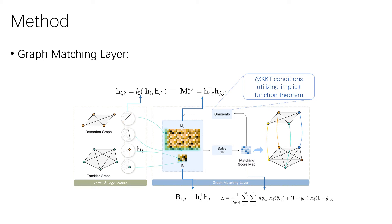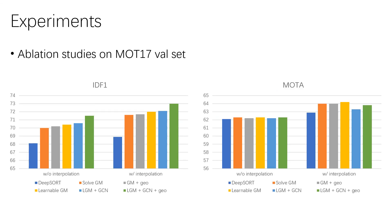Solving the relaxed quadratic programming, we obtain the matching score map. The gradients for backpropagation can be derived from the KKT conditions with the help of the implicit function theorem. We train our model with a weighted BCE loss function. Before that, we sharpen the matching score map via a softmax function with temperature. Here are the experimental results. We ablate each component of our model on the MOT17 validation set. The results show the effectiveness of our proposed learnable graph matching method, especially on the IDF1 metric.